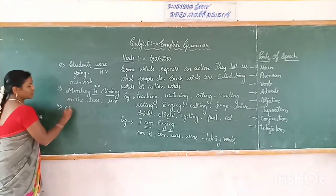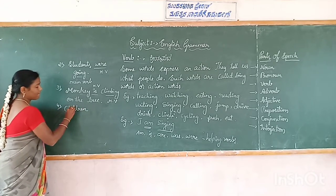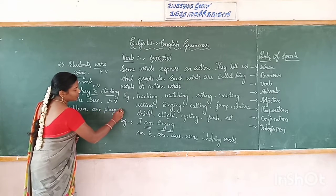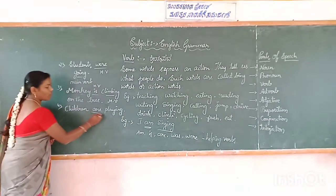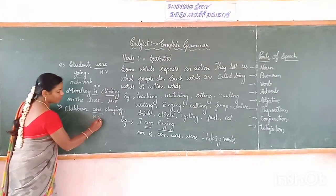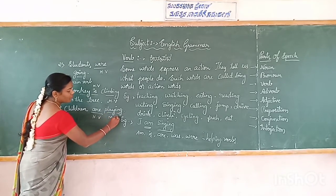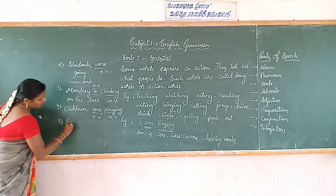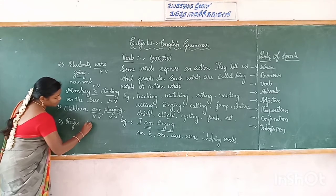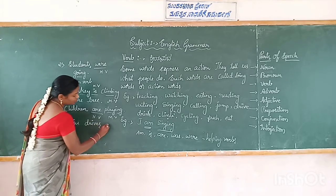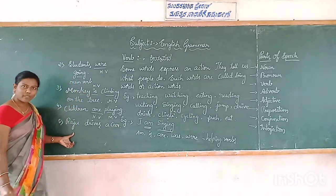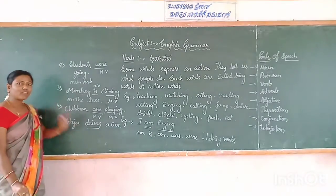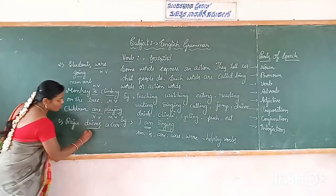Next one: Children are playing. In this sentence 'are' is a helping verb and 'playing' is a main verb. Next one: Raju drives a car. Is there a helping verb in this sentence? No, there is no helping verb. So 'drives' is the verb — it is only a main verb.